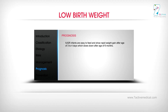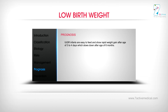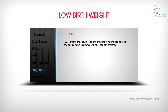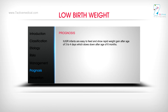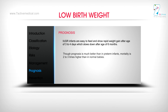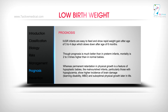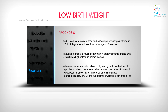Prognosis: IUGR infants are easy to feed and show rapid weight gain after age of 3–4 days, which slows down after age of 6 months. Though prognosis is much better than in preterm infants, mortality is 2–3 times higher than in normal babies. Whereas permanent retardation in physical growth is a feature of hyperplastic babies, the malnourished infants, particularly those with hypoglycemia, show higher incidence of brain damage, learning disability, MBD, and suboptimal physical growth later in life.